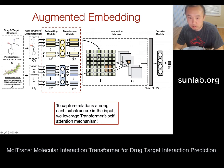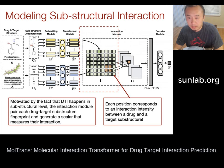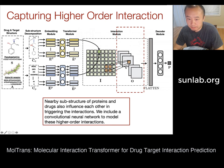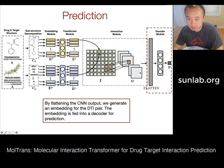Transformer structures give us better embeddings for both the molecule and target. In the interaction module, we not only learn interactions between molecule substructures and protein substructures, but also use a convolutional neural network to model larger-scale interactions of nearby regions. Finally, the CNN output is unfolded into a vector and passed through another neural network to make the final prediction.